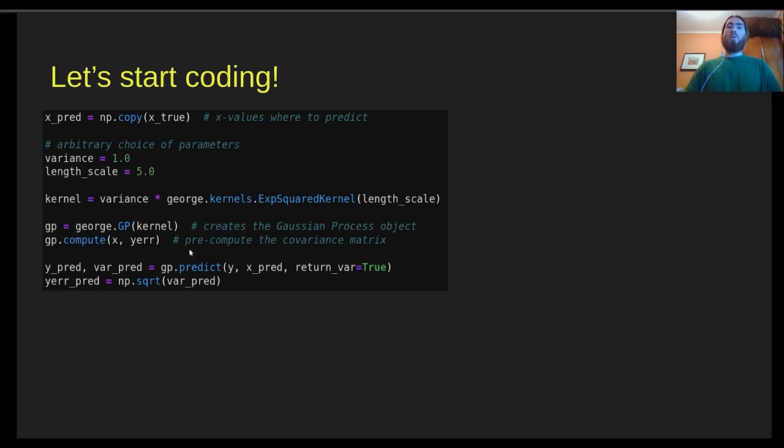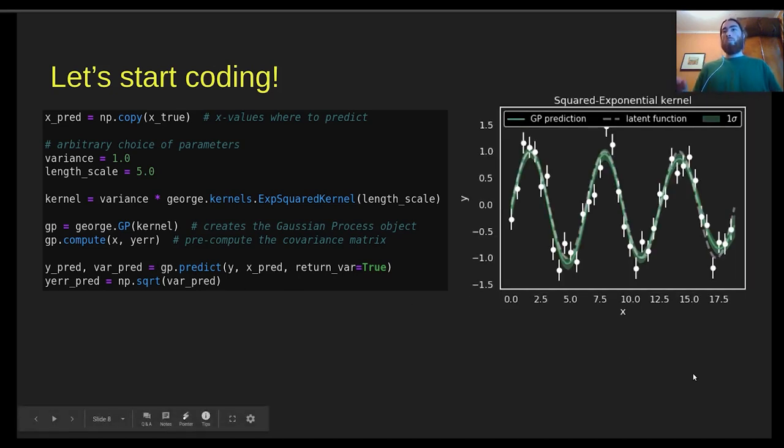Then we use predict. For the prediction, we need the Y values of the observations, the X values, and the X values where we want the prediction to be. This will return the prediction in the Y value and the uncertainty with it. Here we plot our prediction on top of the observations and the latent function. You can see that the prediction does quite well. In general, the latent function is within one sigma throughout most of the range, which is quite good.